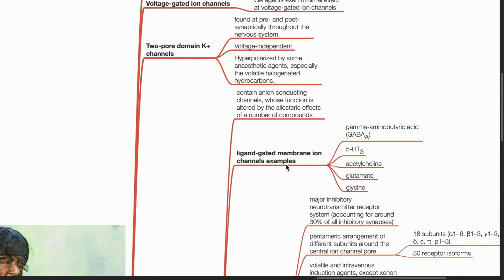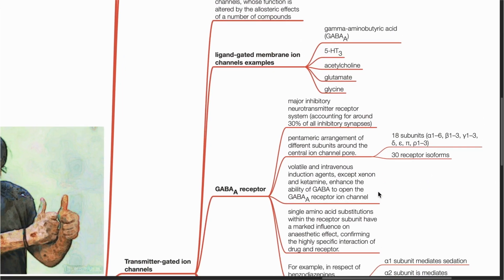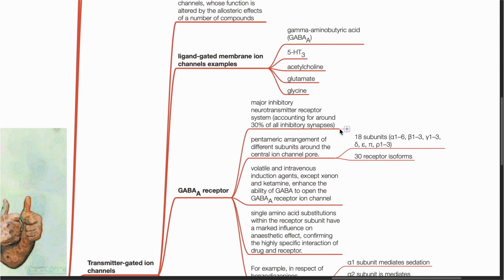Examples of ligand-gated membrane ion channels include the GABA, serotonin, acetylcholine, glutamate and glycine receptors. The GABA-A receptor system is the major inhibitory neurotransmitter receptor system in the nervous system and accounts for around 30% of all inhibitory synapses. It consists of a pentameric arrangement of different subunits around the central ion channel pore.